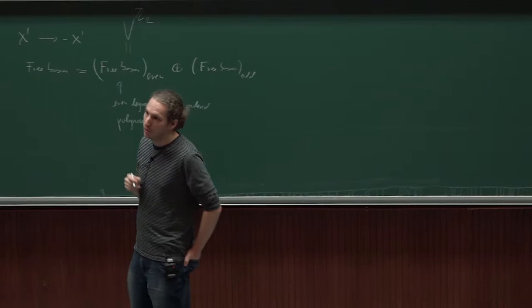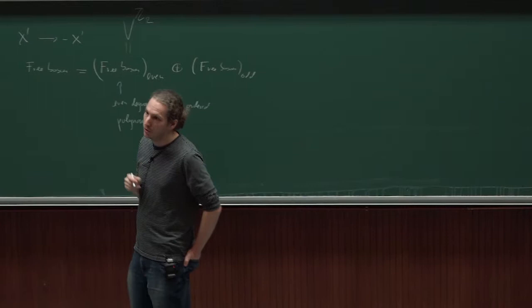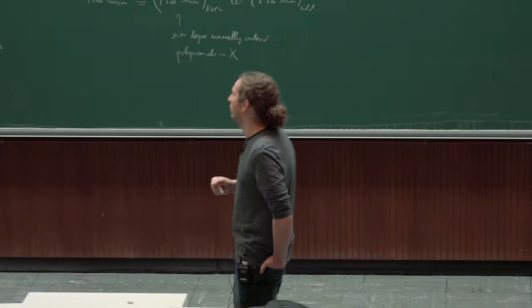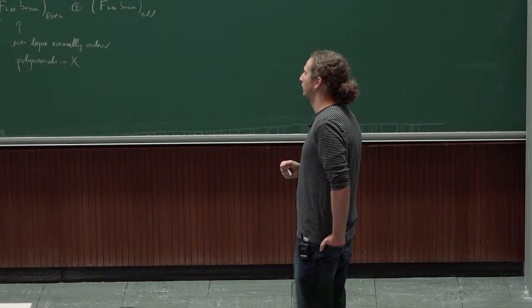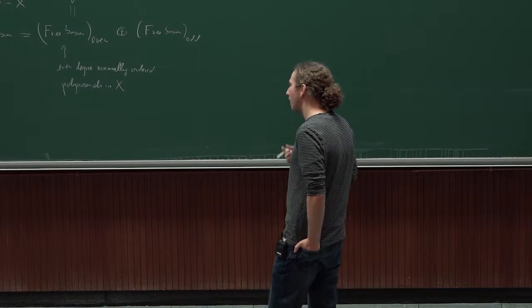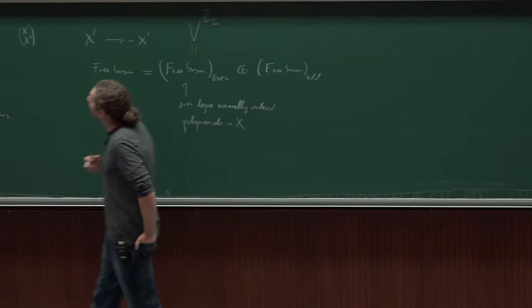The question one wants to ask is: what kind of W-algebra is an orbifold theory? And then one passes to a classical invariant theory. Let's do an example.